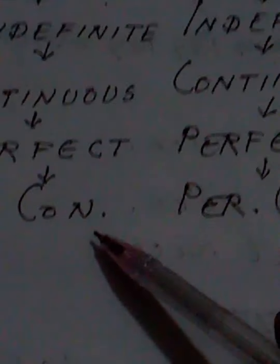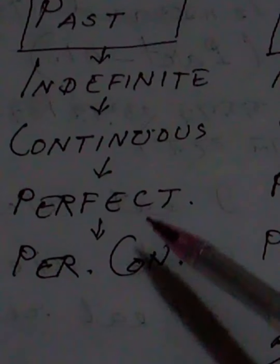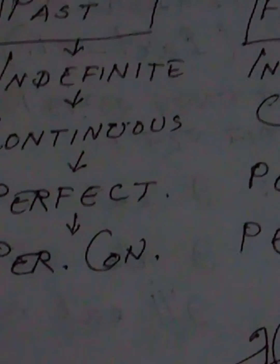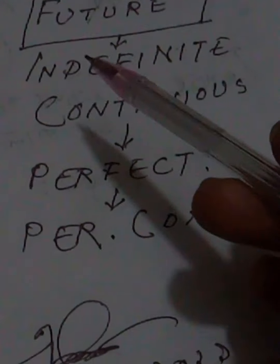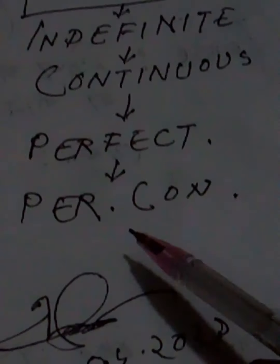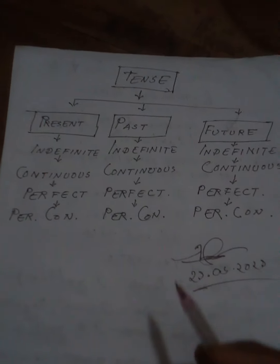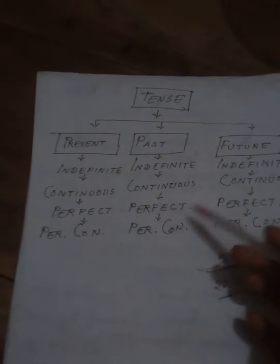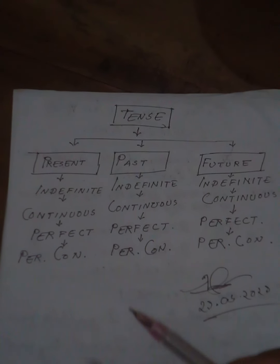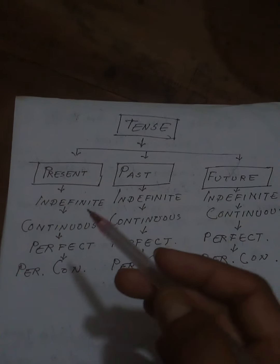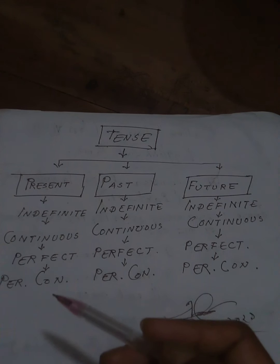In the same way, past tense has: past simple or past indefinite, past continuous, past perfect, and past perfect continuous. Future tense similarly has: future simple or future indefinite, future continuous, future perfect, and future perfect continuous. So altogether, tenses are of 12 kinds. In our next class, we will learn present tense: indefinite, continuous, perfect, and perfect continuous.